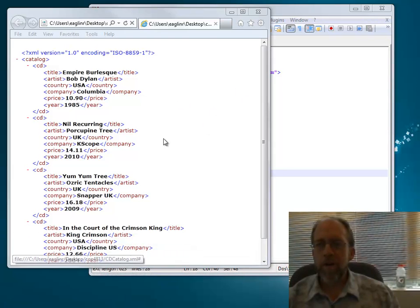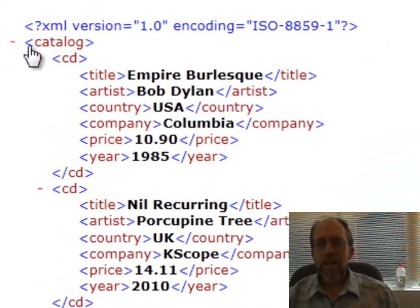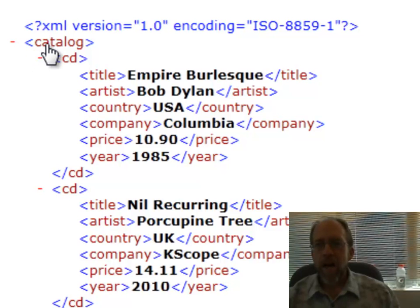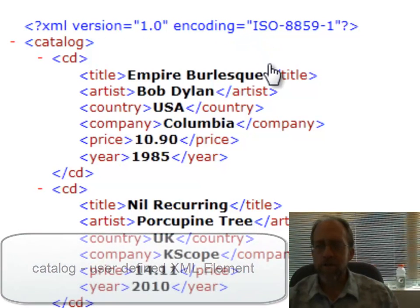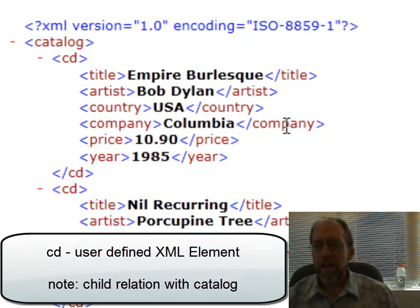Let's look at some XML here. What I've got is a CD catalog. I've created this XML — it's actually taken from W3Schools with a few extra elements added. I've defined this as an XML document using version 1 of XML, and it also has a .xml extension.